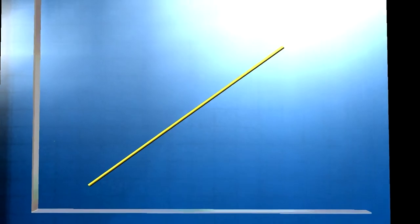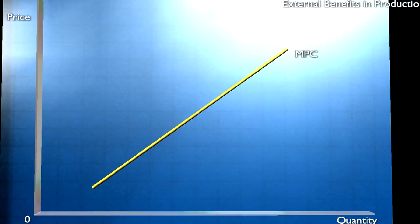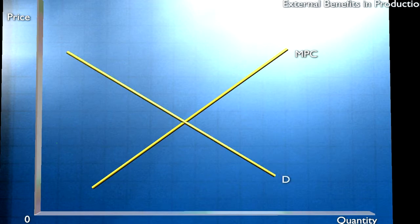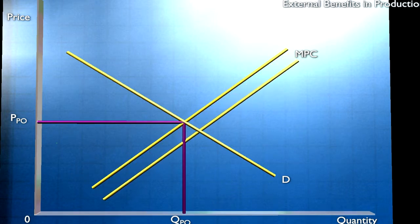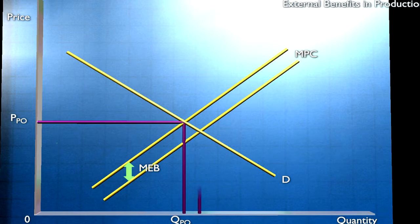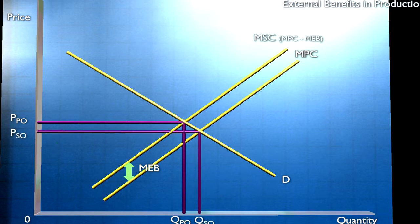Now consider external benefits in production. Again, we've drawn the marginal private cost and the demand curve and shown the private optimum quantity of output and the private optimum price. But this time there's a marginal external benefit — this might be increased crop yields that result from beekeeping and honey production. So the marginal social cost is the marginal private cost less the marginal external benefit. The private optimum is QPO, the socially optimal level of output is at QSO and price PSO. That is to say, in the presence of marginal external benefits, the socially optimum level of output is higher and the socially optimum price is lower than that given by the market.